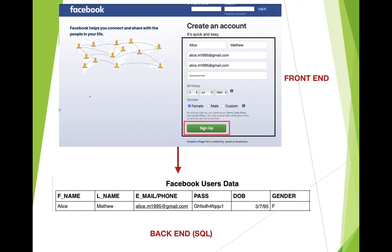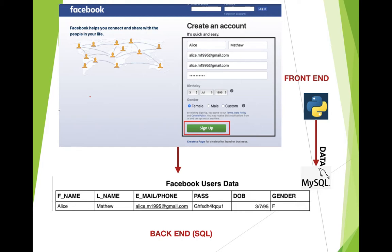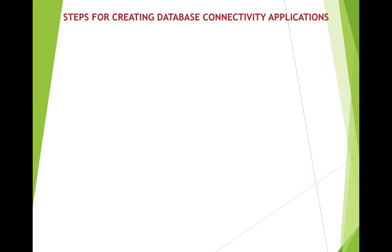As you click the sign-up button, the data travels from the front end and gets stored into the back end. Why is data storage required? Because when you later log in to your account, it should show your details. Facebook retrieves those details from SQL. To summarize: data travels from Python to SQL, and in certain situations data needs to travel back from MySQL to Python.